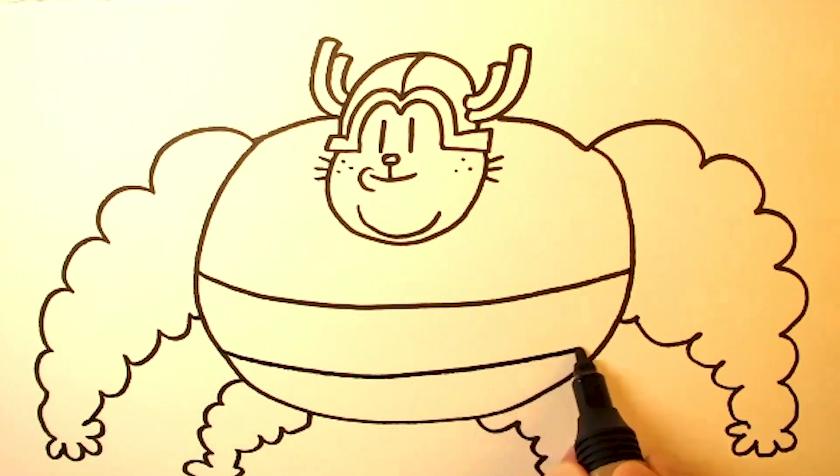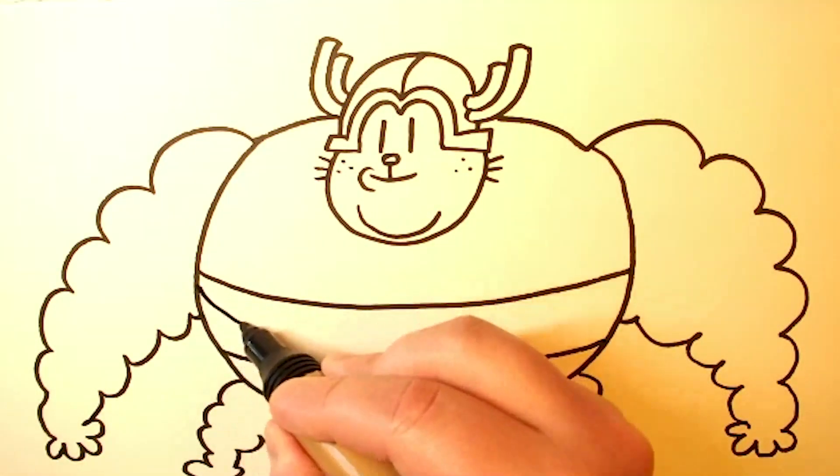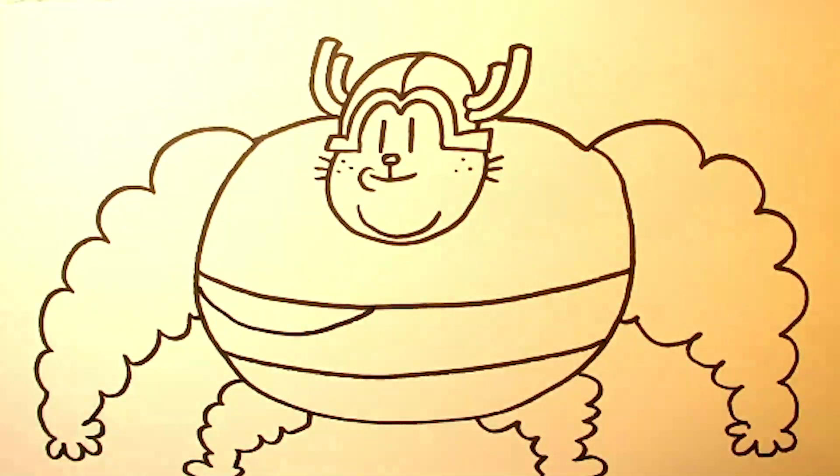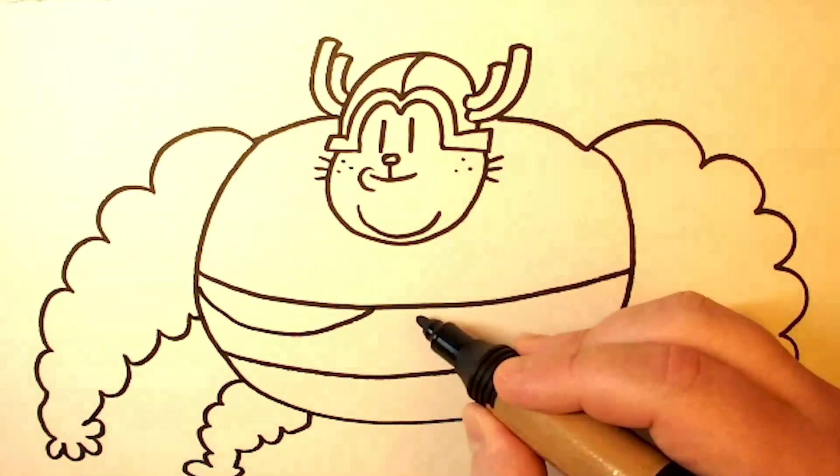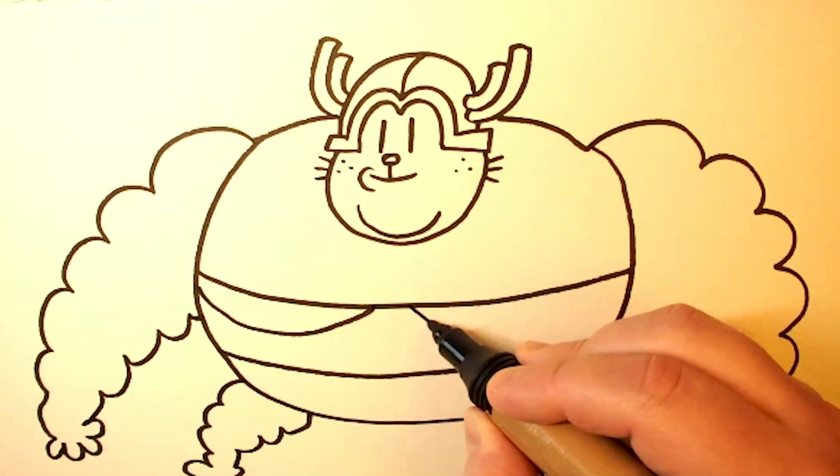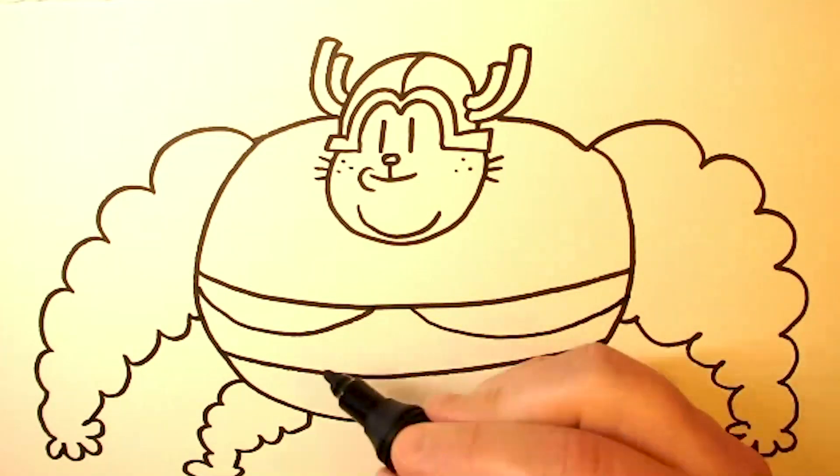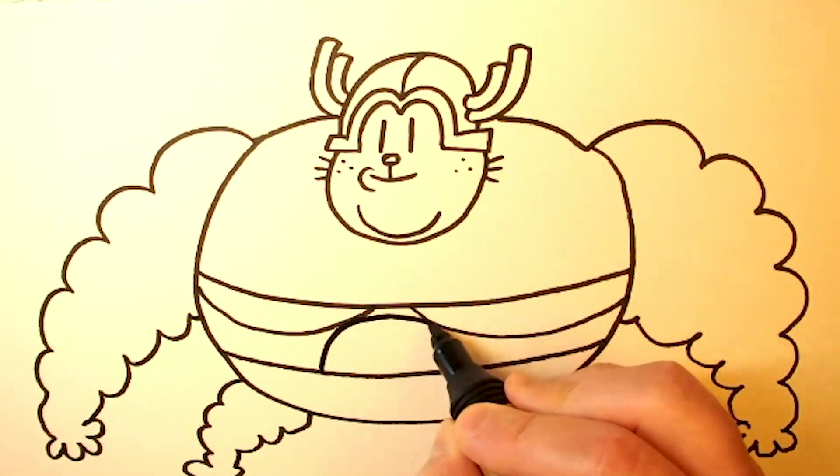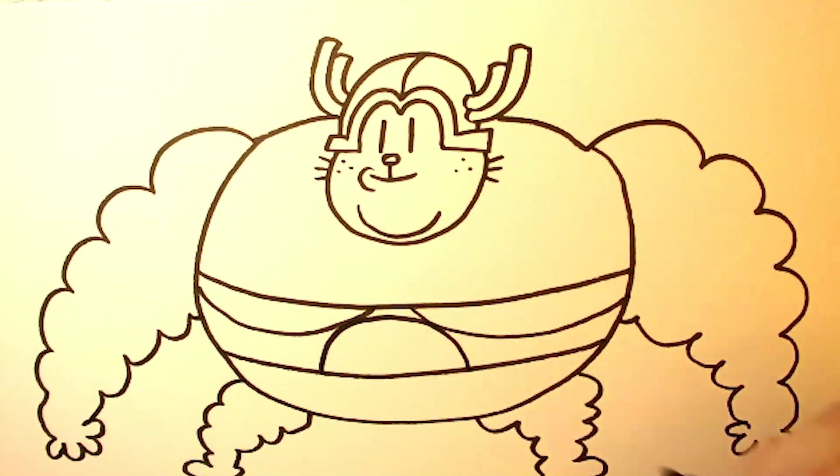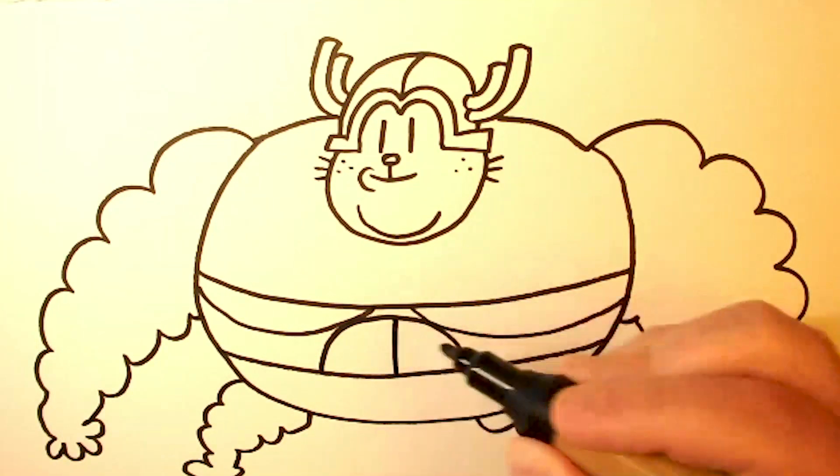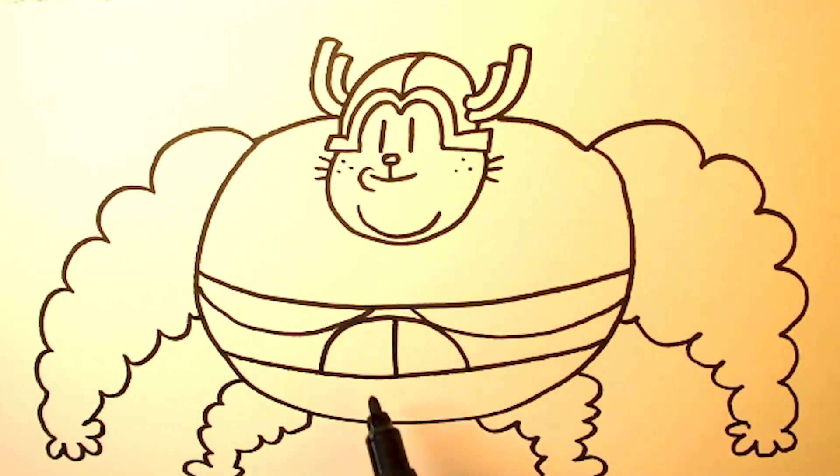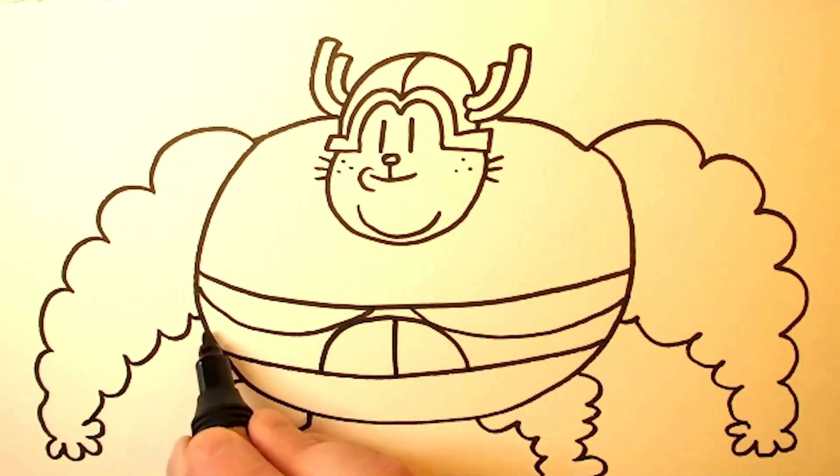And then this line is for his pants. And this is his pectoral muscle here. And his other pectoral muscle here. And this is his six-pack right here.